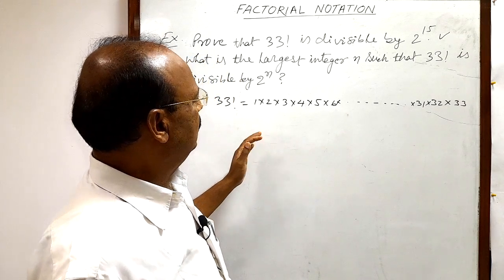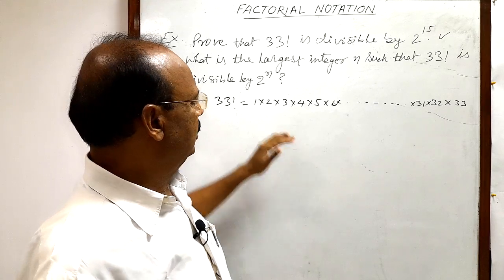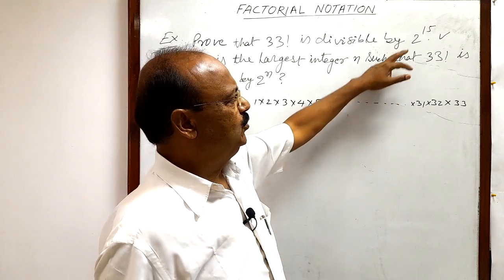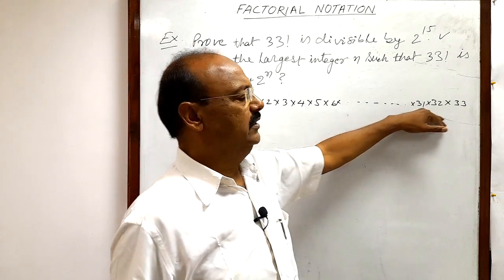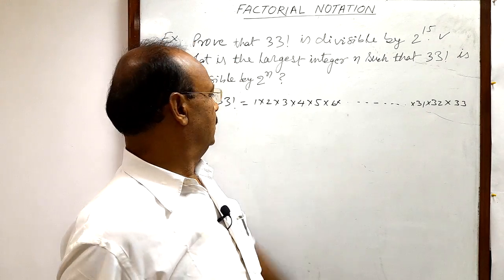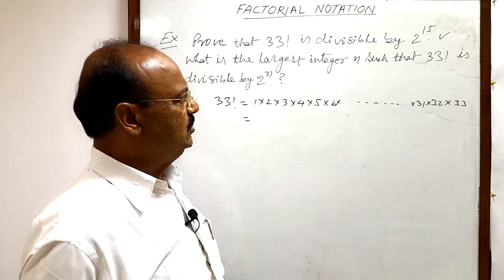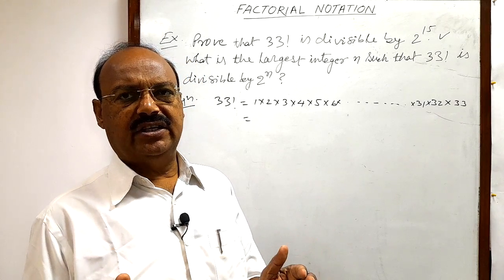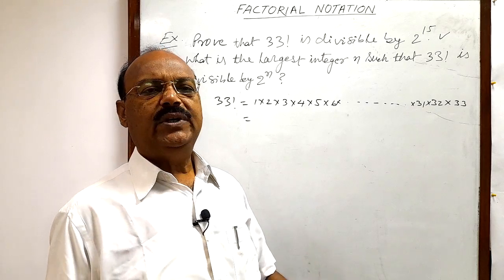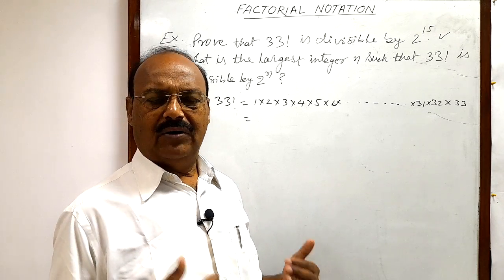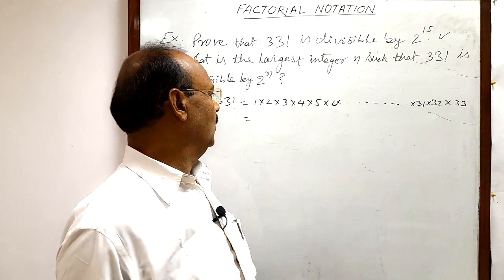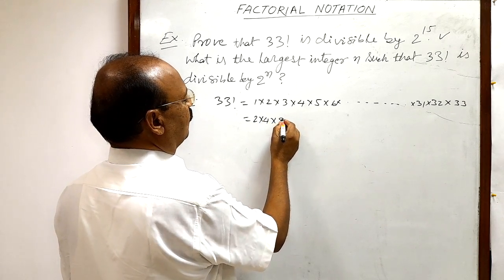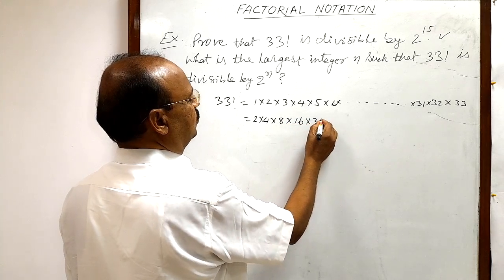First of all we will try to collect all 2s from these multiplicands, and we will try to show that 2 to the power 15 is a factor of this number. Here it will be sufficient to collect only those numbers like 2, 4, 8, 16, 32, etc., which can be expressed as a power of 2, as an exponent of 2. Let us first make a group of these numbers: 2 into 4 into 8 into 16 into 32.